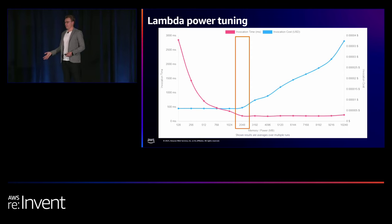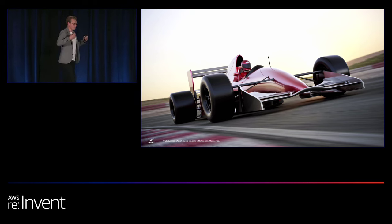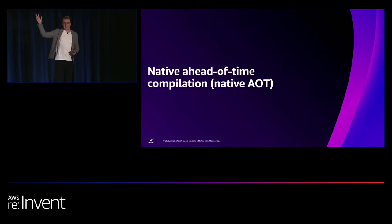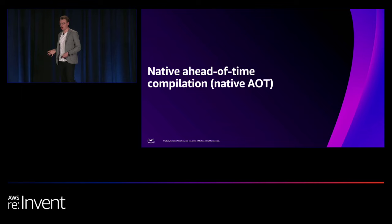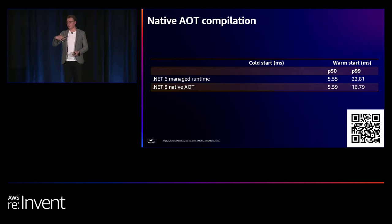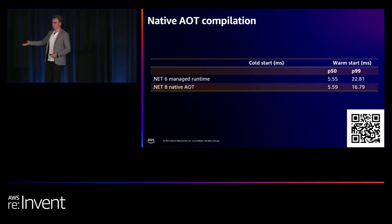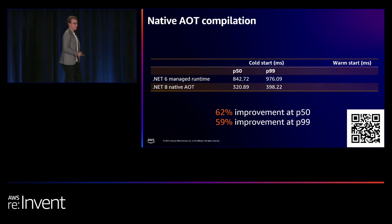If you want pure performance — functions as fast as those drivers speeding around Vegas — native ahead-of-time compilation can help. Native AOT is a feature of .NET that went GA in .NET 7 and was improved in .NET 8. It allows you to generate a native binary of your .NET application, removing the need for JIT and dramatically improving startup time. Comparing a .NET 6 single-purpose handler with the same function natively compiled in .NET 8: warm start numbers are comparable, but at cold start the improvement is dramatic — a 62% improvement at P50 and a 59% improvement at P99. Consistent sub-400-500 millisecond cold starts with .NET on Lambda, comparable to the Go runtime using the same application architecture.